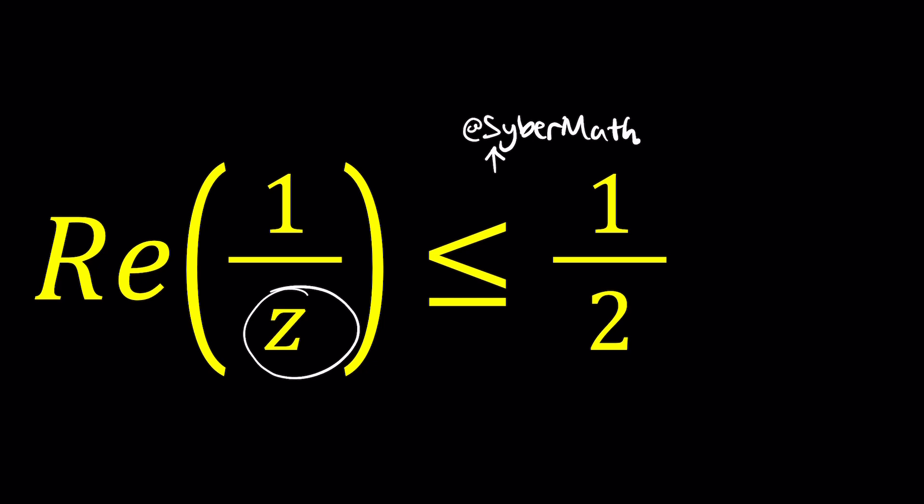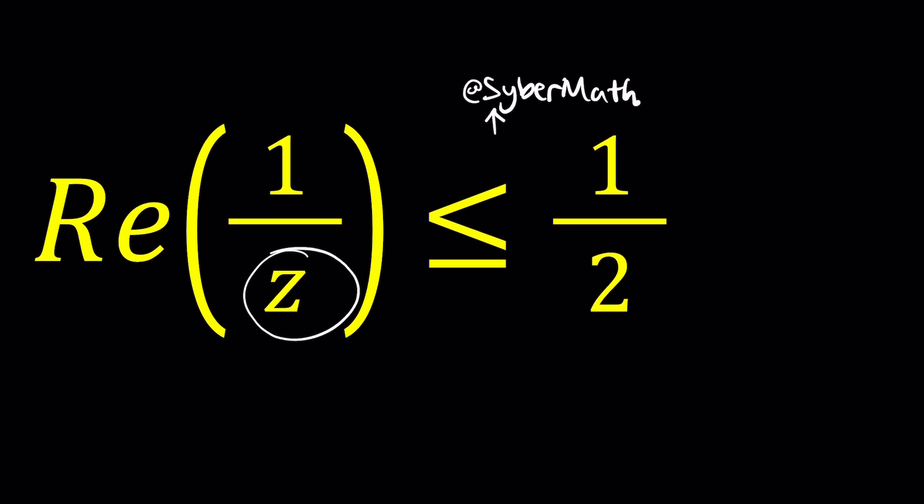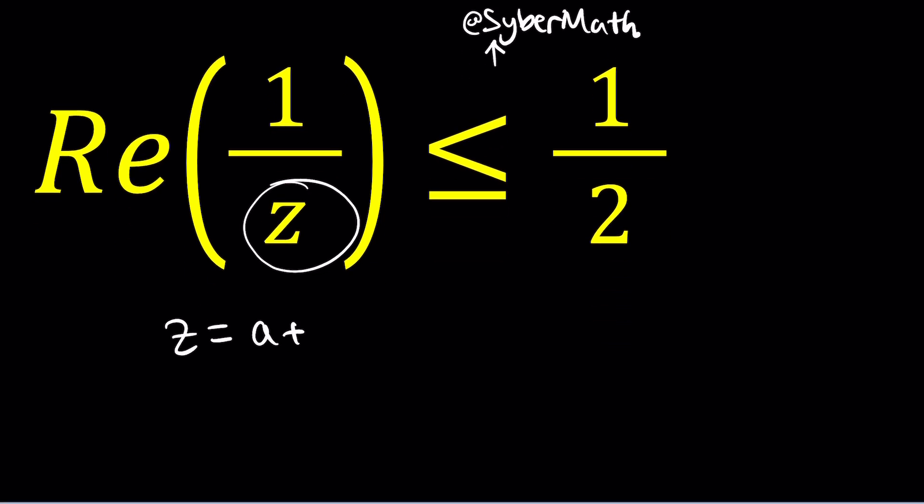Since Z as a complex number can be written in standard form as A plus BI, which is also the name of this channel, we can replace Z with A plus BI. And that should give us an inequality in A and B, in two variables. We're kind of solving this in 2D. But wait a minute. If you're dealing with a locus problem, do not use A plus BI. Since it's a locus problem, we should go with X plus YI instead. And why is that? Because this represents on the coordinate plane some type of inequality or equation or any type of curve.